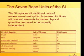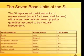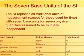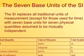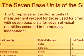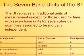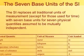The seven base units of the SI system. The SI system replaces all traditional units of measurement — except those used for time — with seven base units for seven physical quantities assumed to be mutually independent. When you talk about something that has a length, the base unit is the meter. Everything is based on the meter, which is approximately a yard.